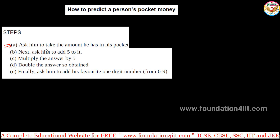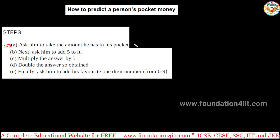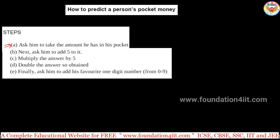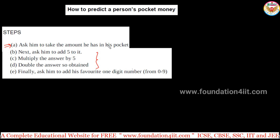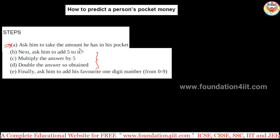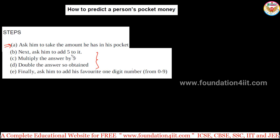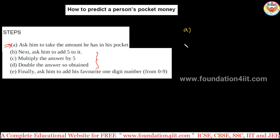First, ask him to count the amount in his pocket and keep that number in mind — he should not tell you the amount. We have to do four simple calculations. The first step is to ask him to add 5 to the amount in his pocket. He keeps all calculations in mind without telling you directly. I'll show you with an example and then reveal the secret.